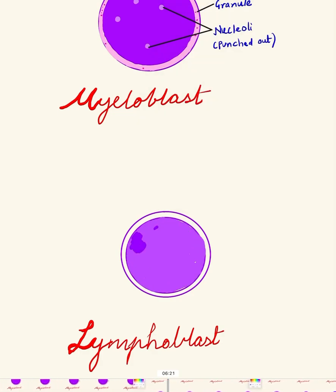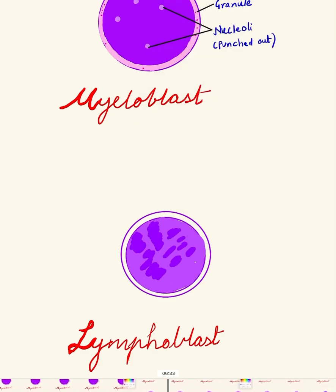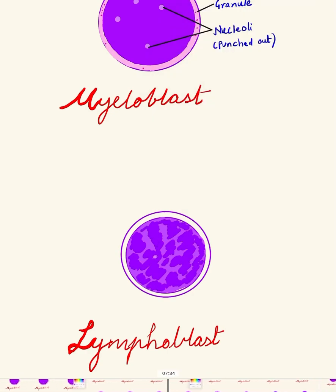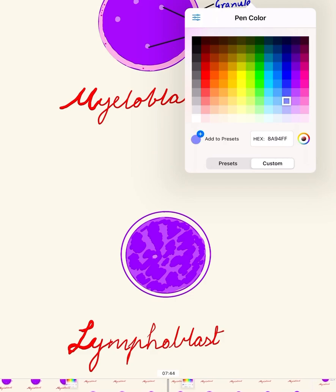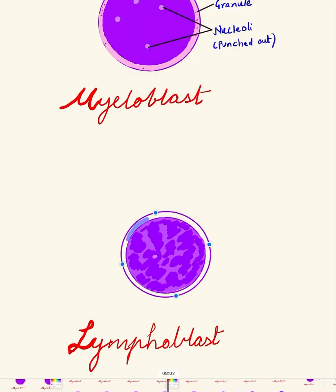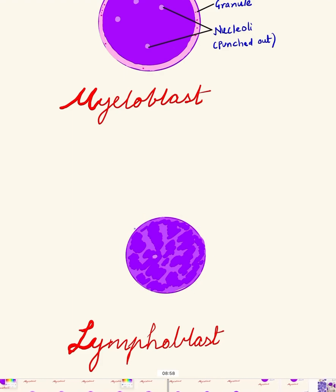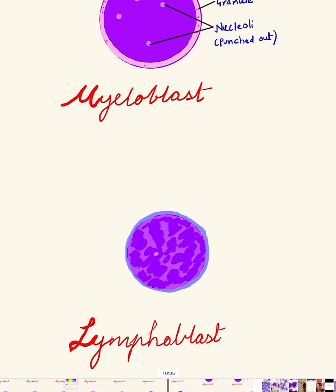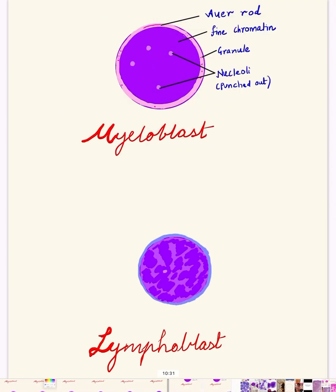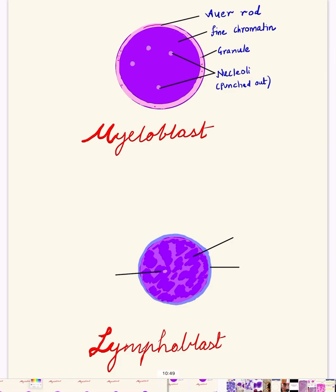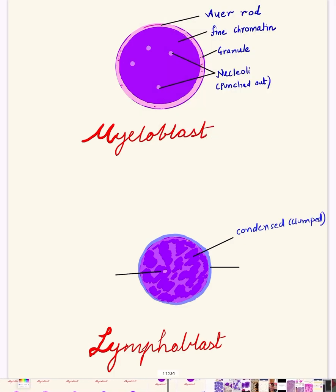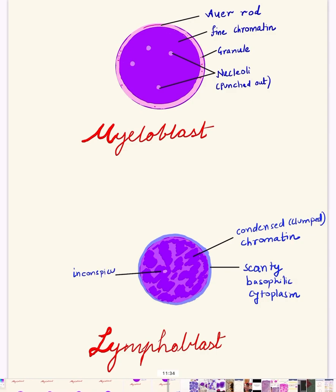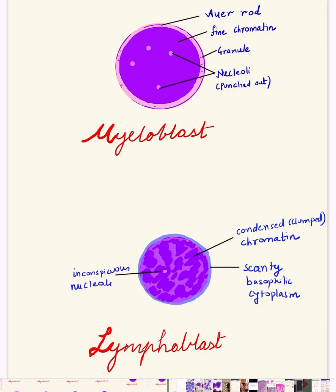Lastly, draw the lymphoblast. Draw the chromatin which is clumped — shade it with dark and light colors at different places to show clumped chromatin. Draw nucleoli; you can draw a single nucleolus or two. Then make the thin rim of basophilic cytoplasm — the cytoplasm is very scant in case of the lymphoblast and is agranular. Label: condensed or clumped chromatin, scanty basophilic cytoplasm, and inconspicuous nucleoli.